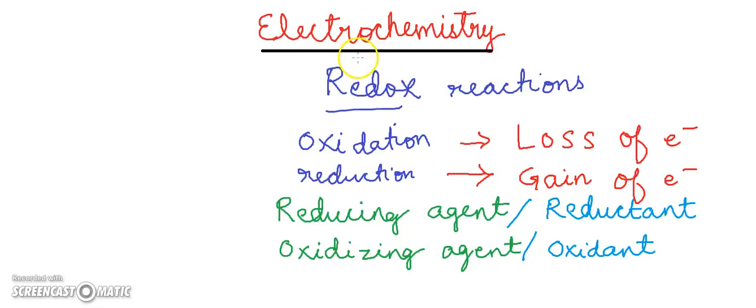Electrical energy plays an important role in many chemical reactions. The branch of science which deals with the production of electricity from energy released during spontaneous chemical reactions and the use of electrical energy to bring about non-spontaneous chemical transformations is known as electrochemistry. This subject is of theoretical as well as practical importance.